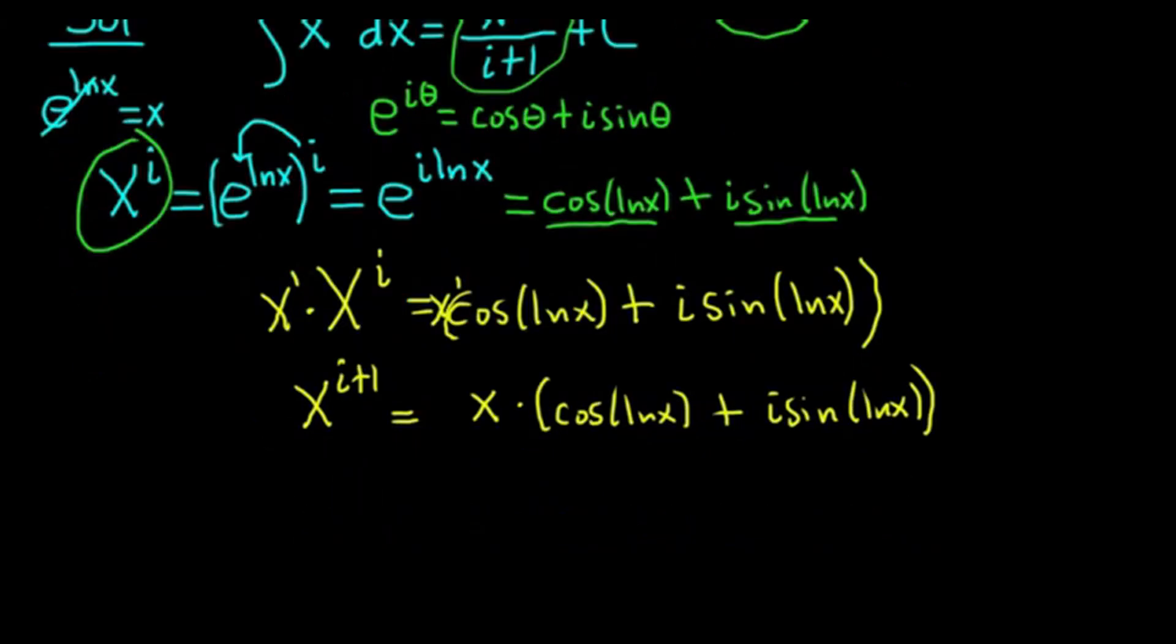I'm going to leave myself some room this time. Times cosine ln x plus i sine ln x. Good stuff. Now we need to get an i plus 1 on the bottom. So we'll divide both sides by i plus 1.